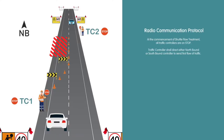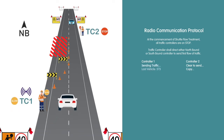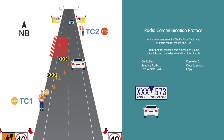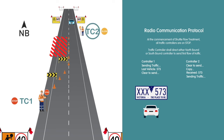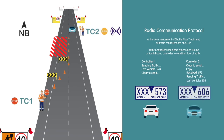At the commencement of shuttle flow treatment, all traffic controllers are on stop. The traffic controller shall direct either the northbound or southbound controller to send the first flow of traffic. Radio communications follow this format: 'Clear to send.' 'Sending traffic.' 'Copy.' 'Last vehicle 573.' 'Received 573.' 'Clear to send.' 'Sending traffic.' 'Last vehicle 606.'